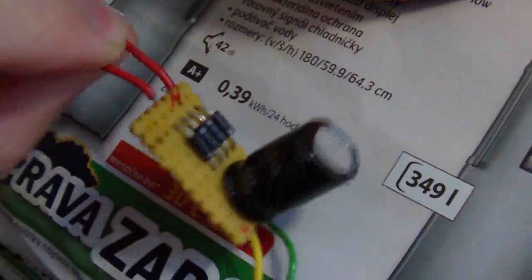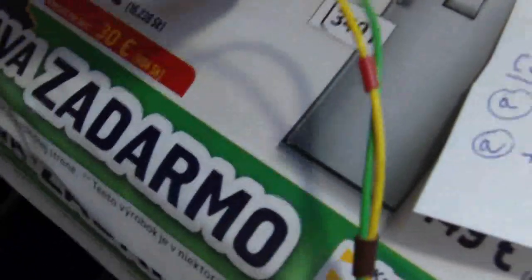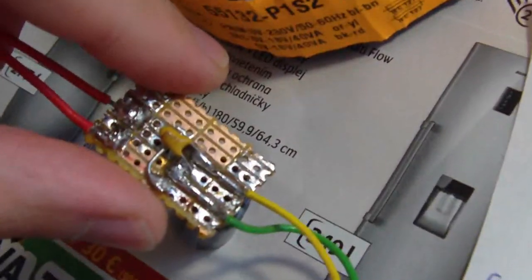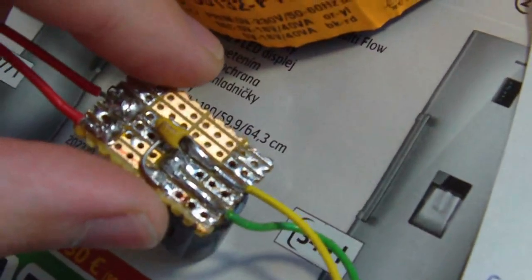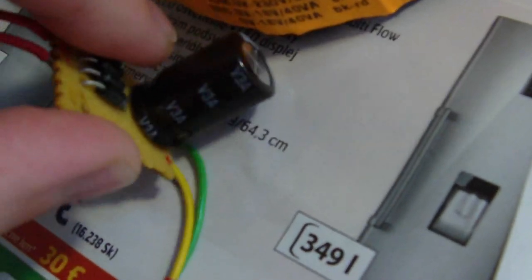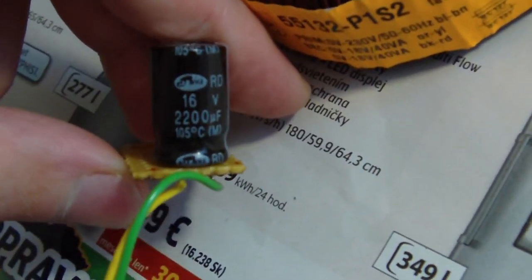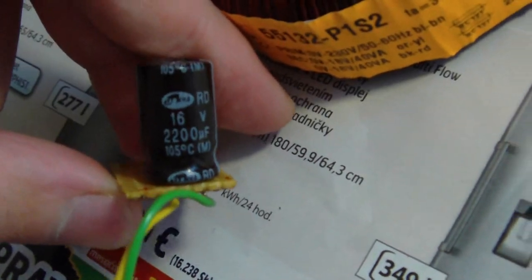Here is the diode bridge. With 2 transistors. Capacitors. This is tantal. 100 nF. And this is electrolytic capacitor. 1200 mF.